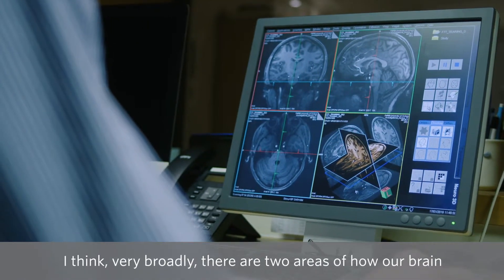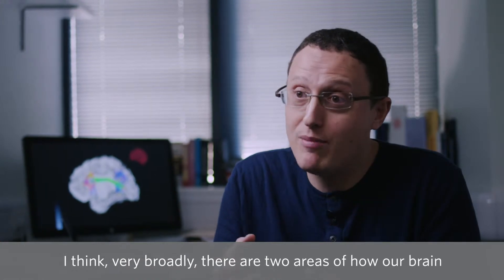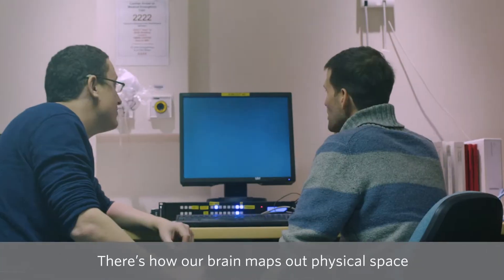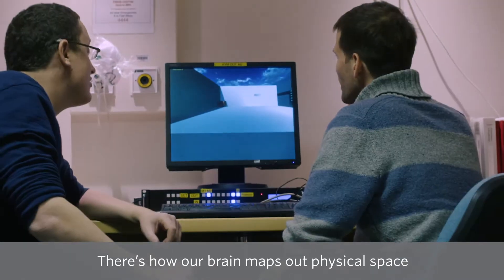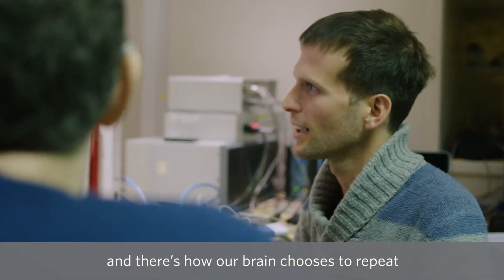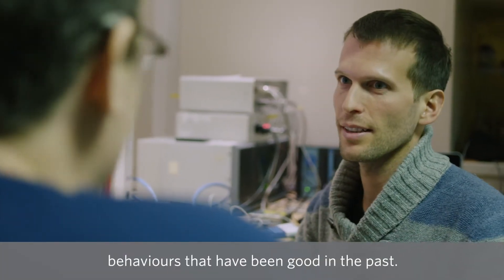I think very broadly, there are two areas of how our brain controls our behavior that we roughly understand. There's how our brain maps out physical space, and there's how our brain chooses to repeat behaviors that have been good in the past.